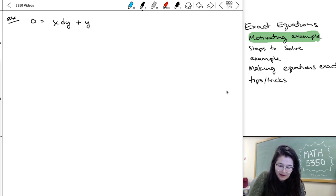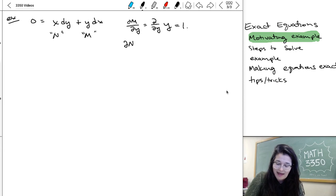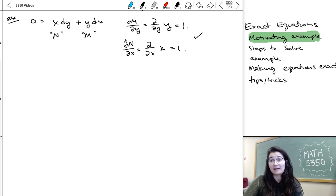So our y was our m and our x was our n. And so we can go ahead and check that dm/dy is the partial derivative with respect to y of y, which is 1. And dn/dx is the partial derivative with respect to x of x, which is also 1. So since I got the same answer, that second condition is satisfied that the partial derivative of n with respect to x has to be the same as the partial derivative of m with respect to y.